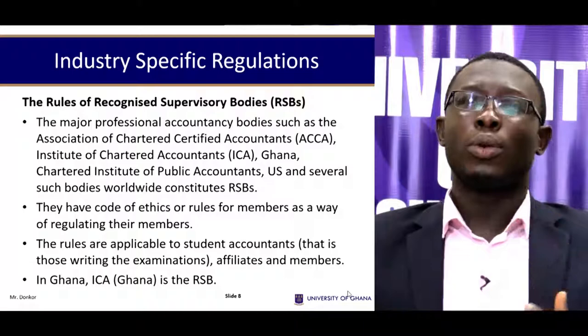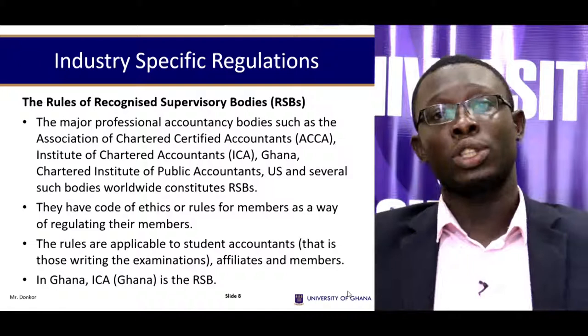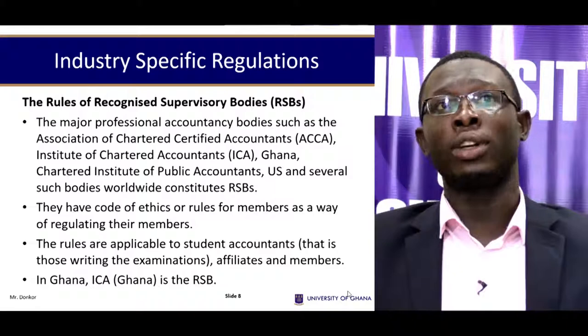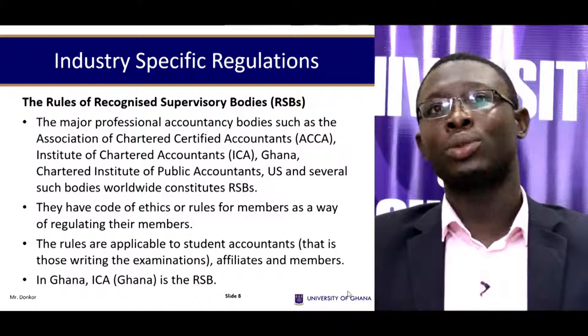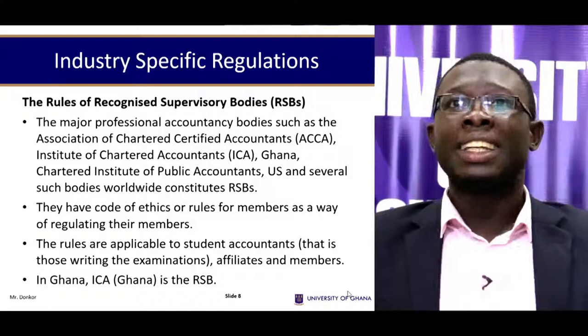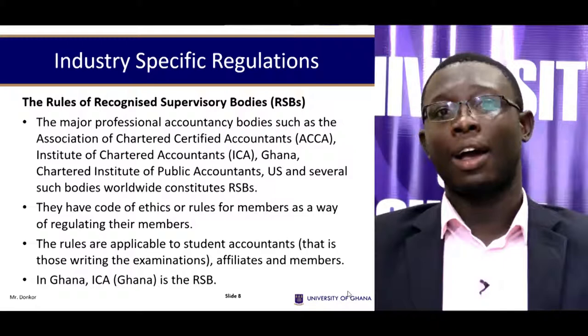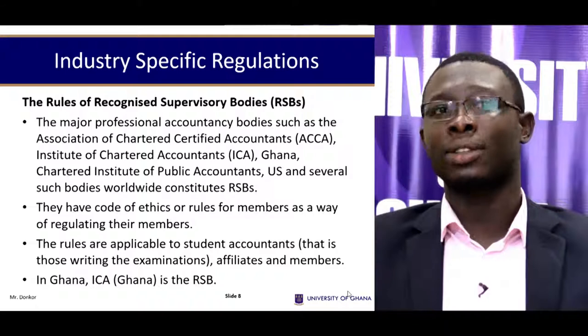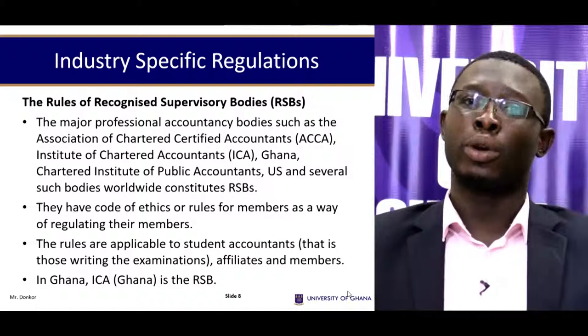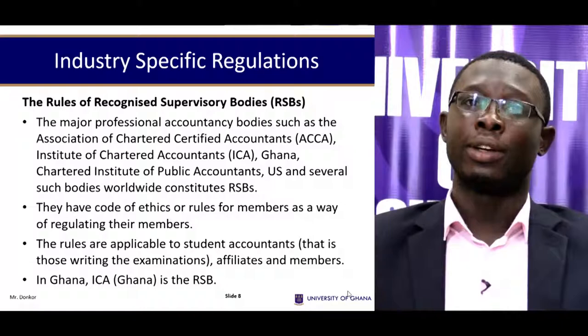Industry-specific regulations: within the industry an entity finds itself, there are specific regulations that govern its operations, and this is also the case for auditing. Major professional accountancy bodies such as the Association of Chartered Accountants (ACCA), the Institute of Chartered Accountants Ghana, and the Chartered Institute of Public Accountants constitute the recognised supervisory bodies that regulate auditing in their respective jurisdictions. They have codes of ethical rules for members. In Ghana, the Institute of Chartered Accountants Ghana is the recognised supervisory body for professional accountants and auditing as a whole.